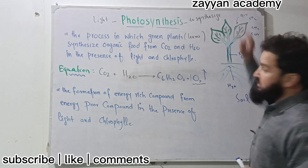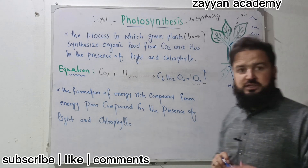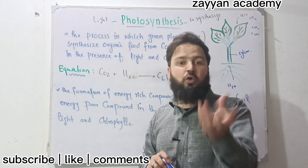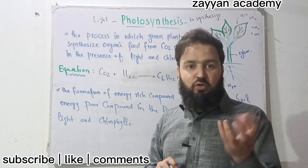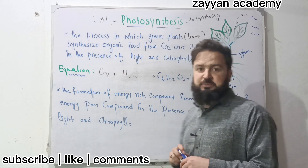CO2 is a gas absorbed through the stomata. The stomata are small openings, small pores, located in the lower epidermis of the leaf.